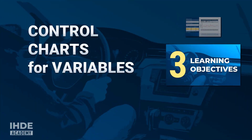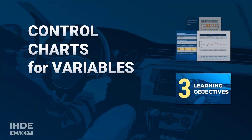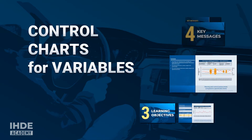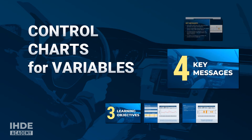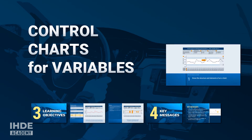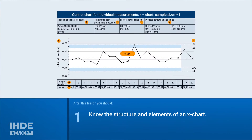In this lesson, we will create an X-Chart for individual measurements and calculate the warning and control limits and compare them with process capability requirements. Hello again to this lesson. What you see here is the quality control chart for individual measurements, also called X-Chart.